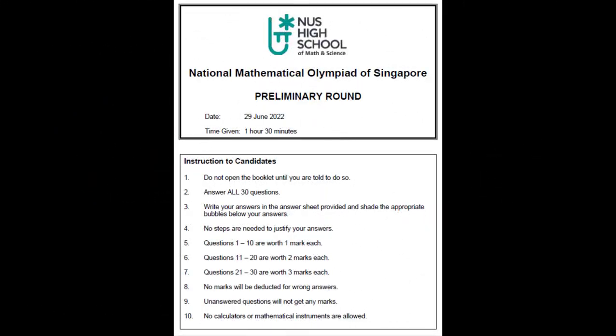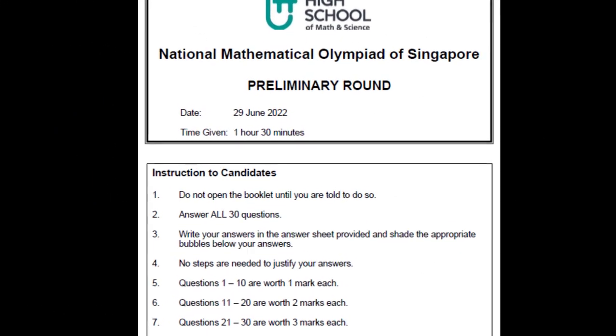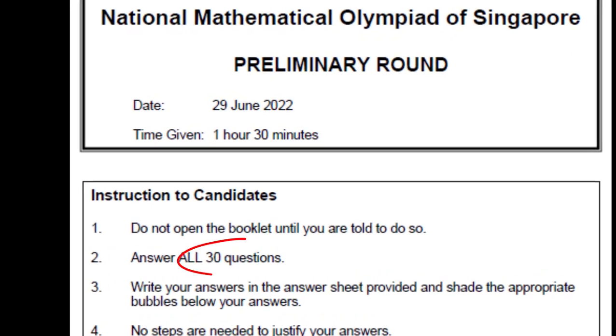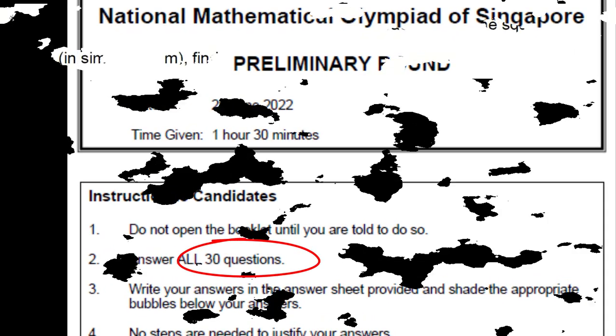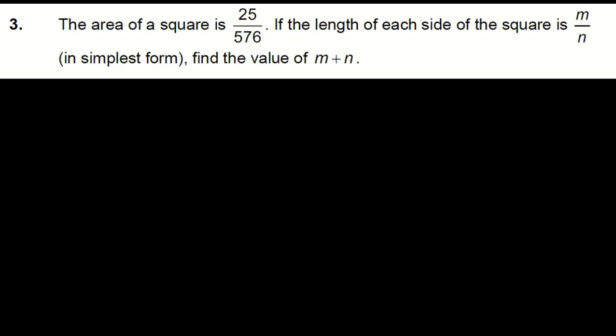Let's start with a relatively straightforward question. Question 3 out of 30 questions in NMOS. The question is as follows. A square has an area of 25 over 576. If the length of each side of the square is expressed as M over N in its simplest form, find the value of M plus N.